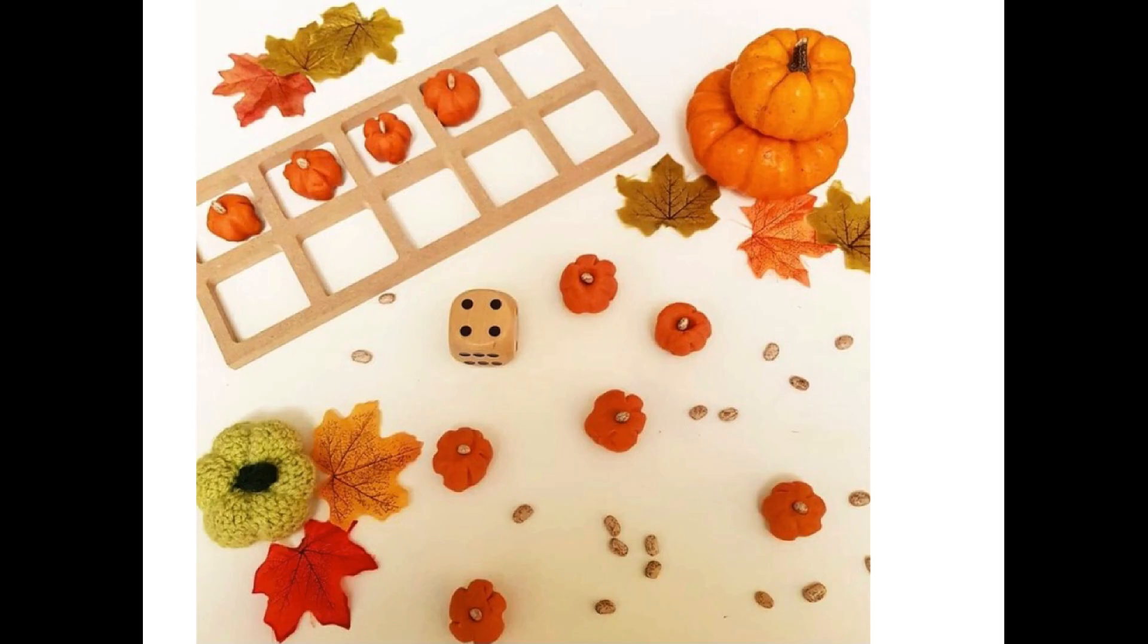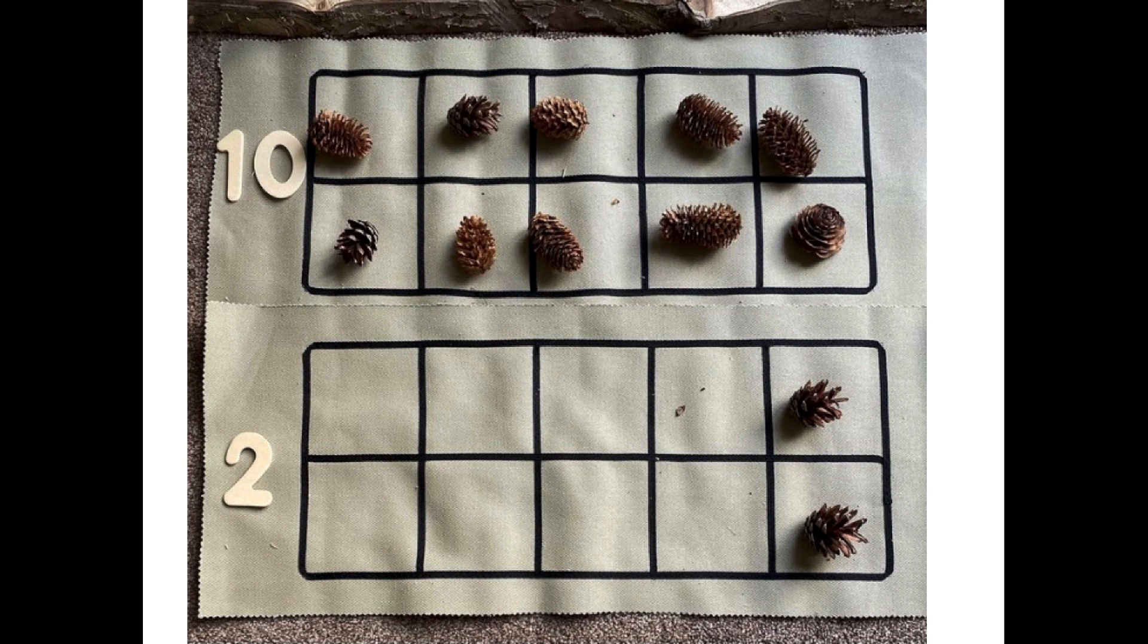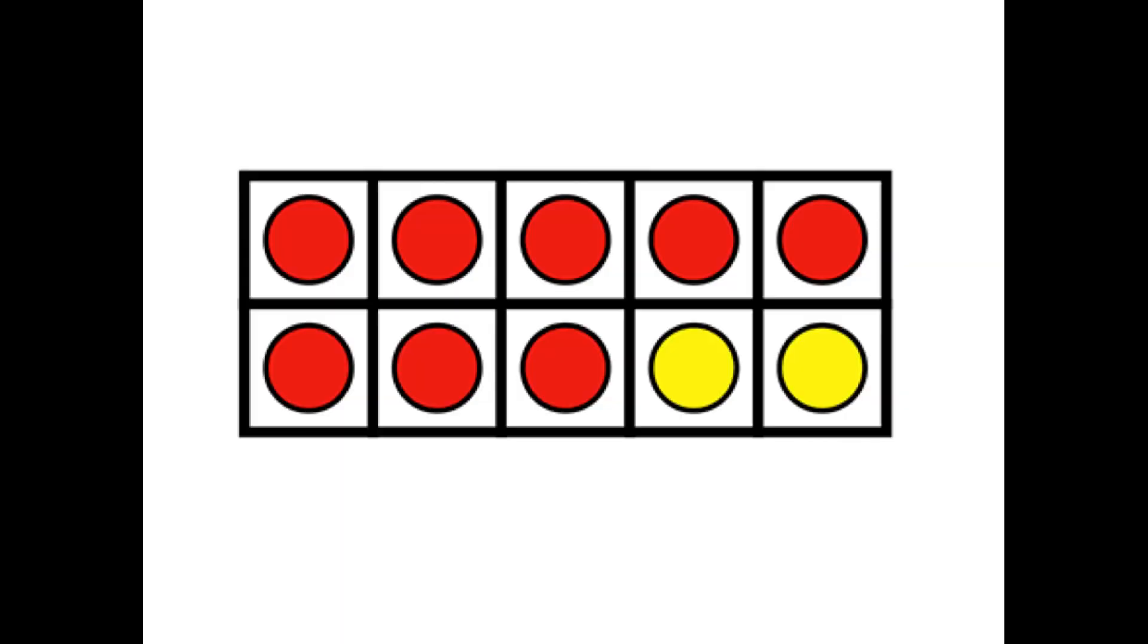Then we introduce ten frames. We start to use these ten frames as a resource in our play and in our activities. So here for example are two lots of five at the top. Two lots of five make ten. When we've got a full frame, a full ten frame, that's ten. And on the bottom we've got eight empty spaces and two counters. So eight and two makes ten. They're really starting to become more agile and their knowledge of these number patterns within ten are just becoming so much more secure.